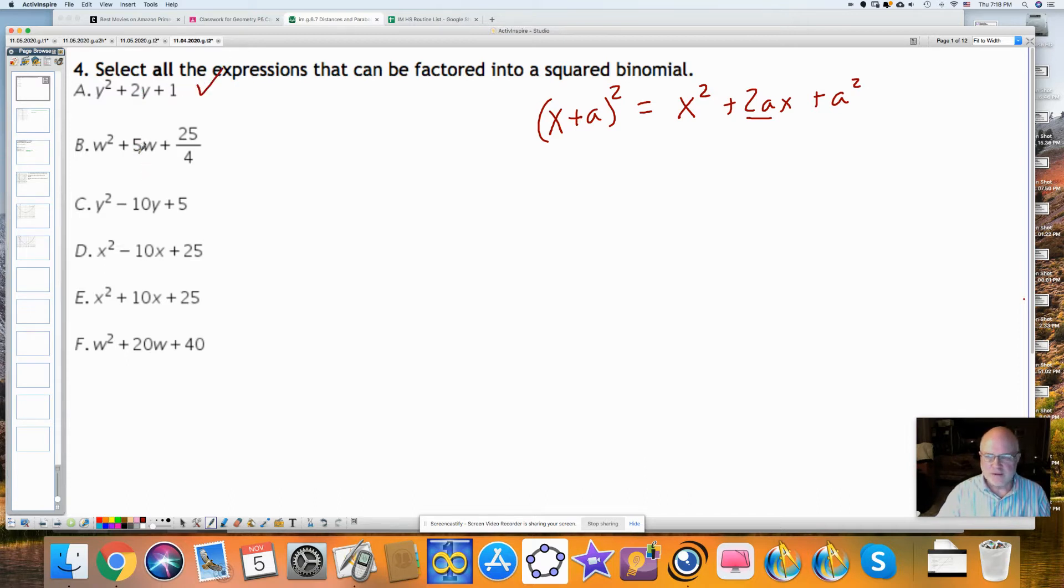Here we have 5. 5 is 2a, so a would be 5/2. When you square 5/2, you get 25/4. This is one of them. You have -10. When you take half of that, you get -5. Negative 5 squared is not 5, it's 25. So this is not one. Again, 5, which is half of 10, squared is 25. So this works. And then half of 20 is 10. 10 squared is not 40. So this does not work.